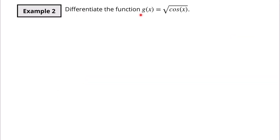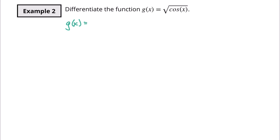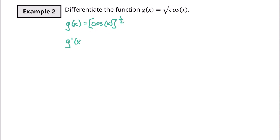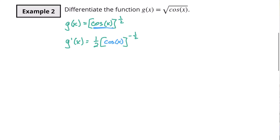Our next example says differentiate g(x) equals the square root of cosine x. A lot of times inside cosine or sine is where you'd have your inside piece, with sine or cosine as the outside. But in this case since it's just cosine x, the square root is the outside piece and cosine x is the inside piece. Rewriting this: cosine of x to the one-half power.